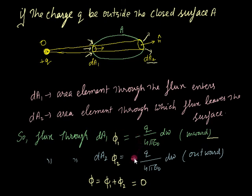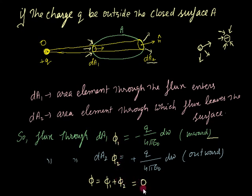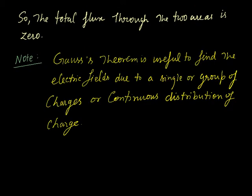The electric flux at phi_2 is in the outward direction, which is positive. We consider negative sign for inward flux and positive sign for outward flux, analogous to how a positive charge gives outward flux and a negative charge gives inward flux. When you add phi_1 and phi_2, the total electric flux becomes zero. This is the important point: if the charge is outside the closed surface, the total flux through the two areas is zero.